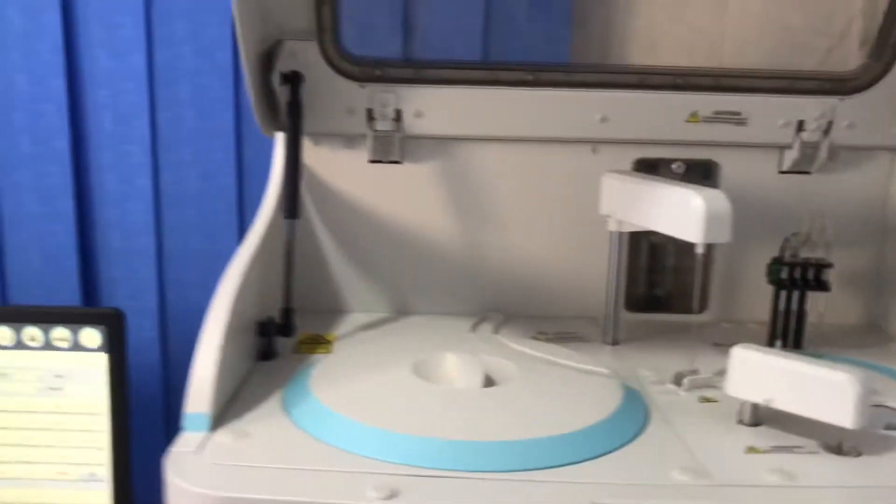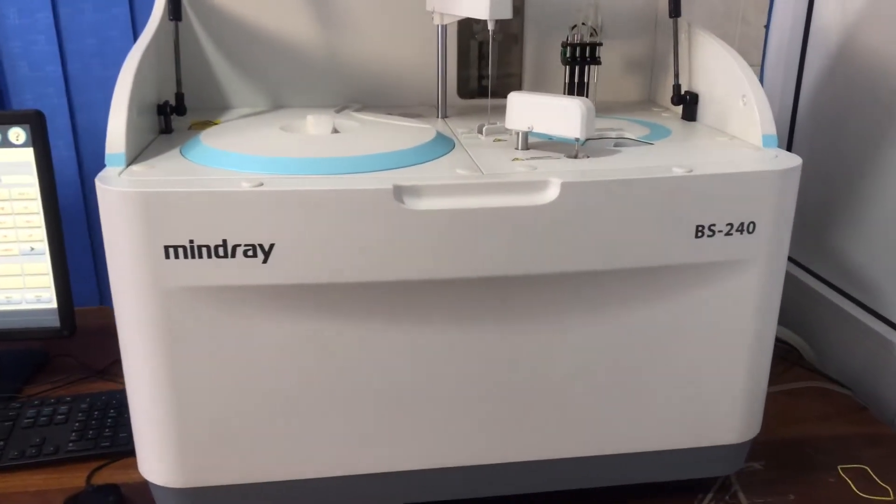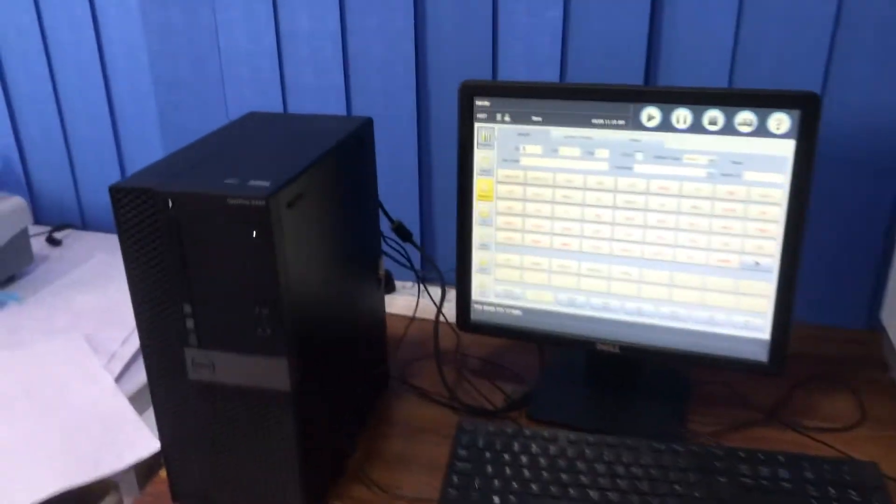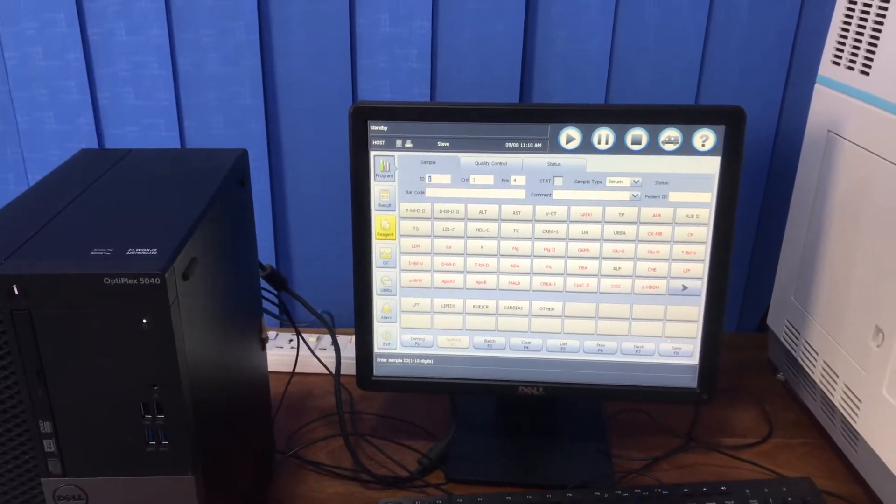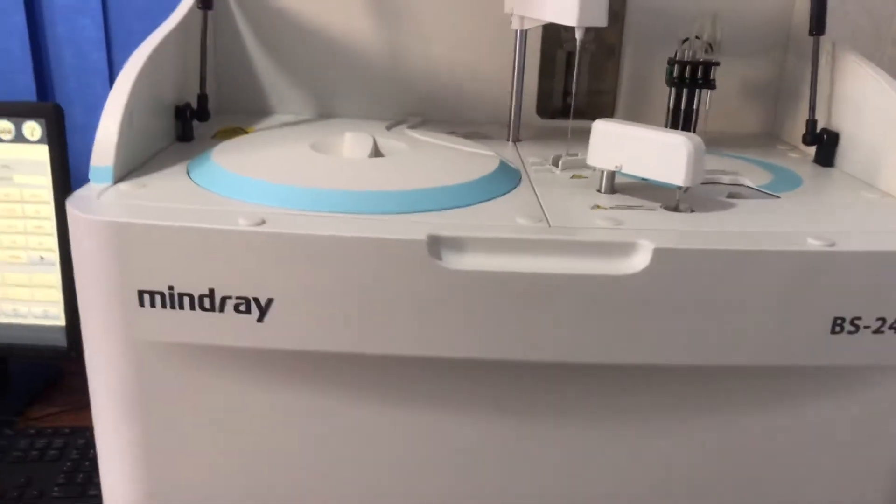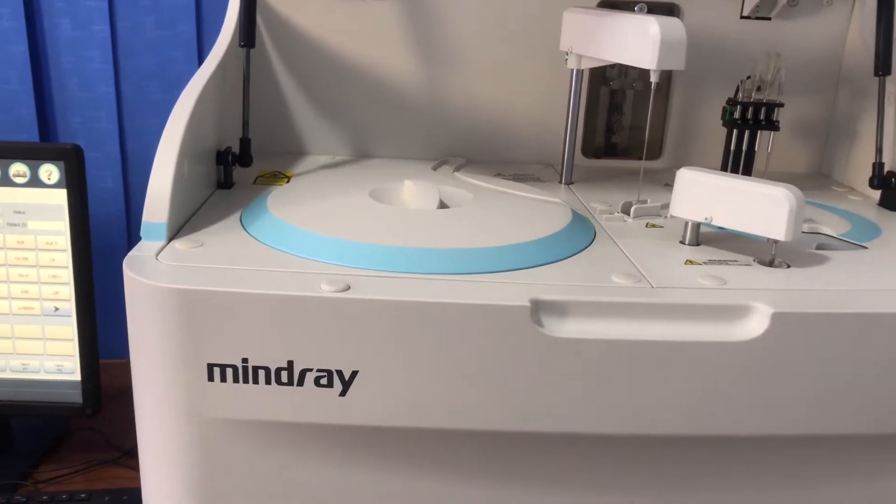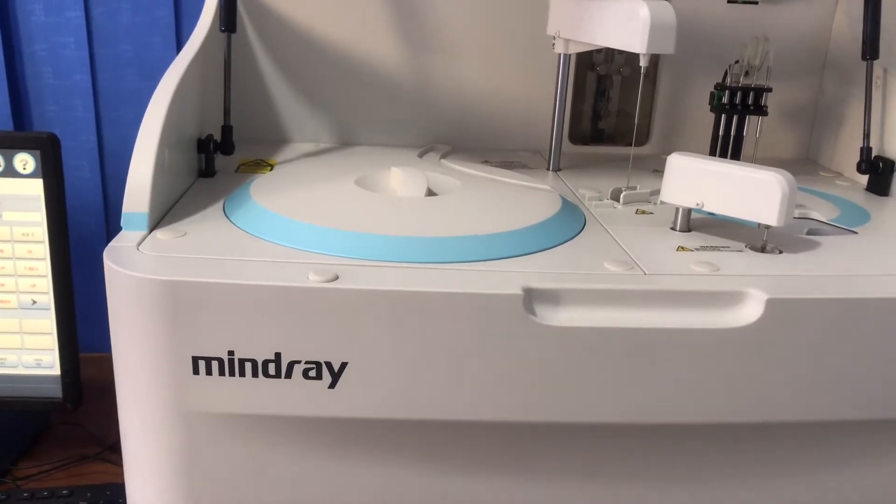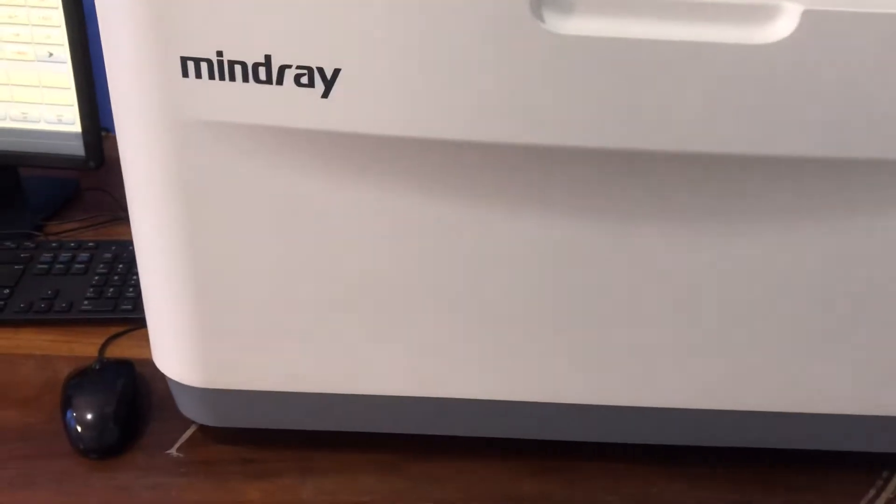What you see on your screen now is the analyzing unit and this is the operating unit. As I already mentioned, in this video our focus will be on the various parts of this analyzer and then how it functions. But before that, take a good look at the machine.